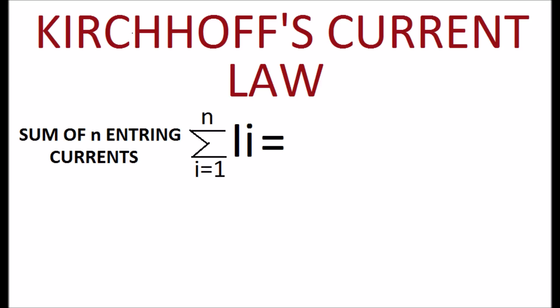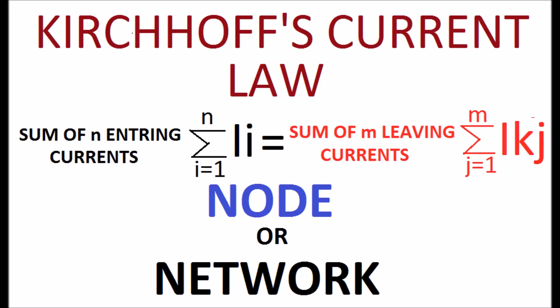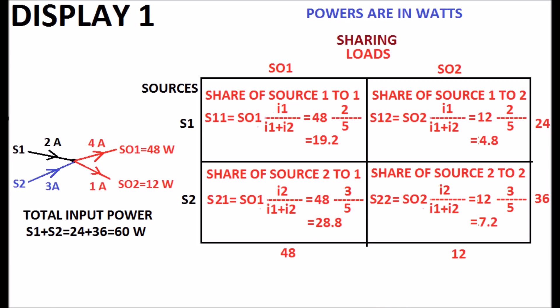equals sum of leaving currents, sigma of J1 to M, IKJ for a node or a network. Refer to display 1.